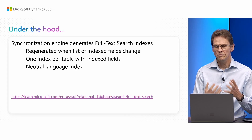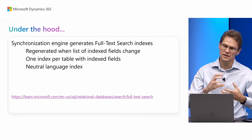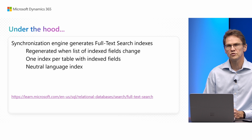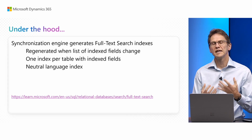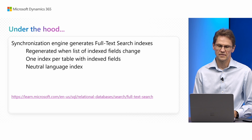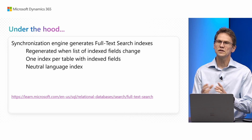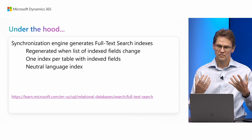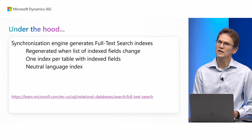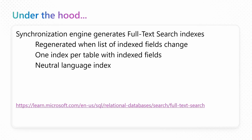Under the hood, the synchronization engine which updates the SQL schema will generate a full text search index and regenerate it whenever the list of indexed fields changes. It will create one index per table with indexed fields. We are creating this as a neutral language index, meaning we only have the standard word breakers — for instance, space and dash — so it is not language dependent. If you want to know more about how full text search works in general, there is a link to the documentation for full text search in SQL.